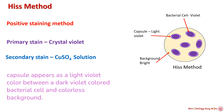The last method is His method. His method is also a type of positive staining that stains the capsule and the bacterial cell with a brighter background. This method uses two reagents: crystal violet and copper sulfate solution. After staining, the bacterial cell appears dark violet, the background appears brighter in color, and the capsule appears as a light violet color.